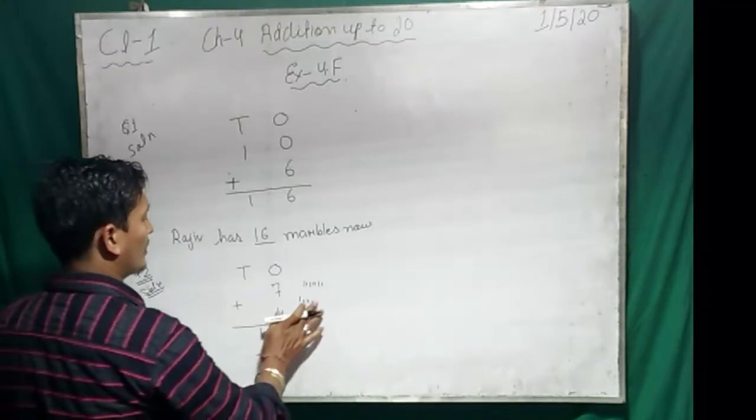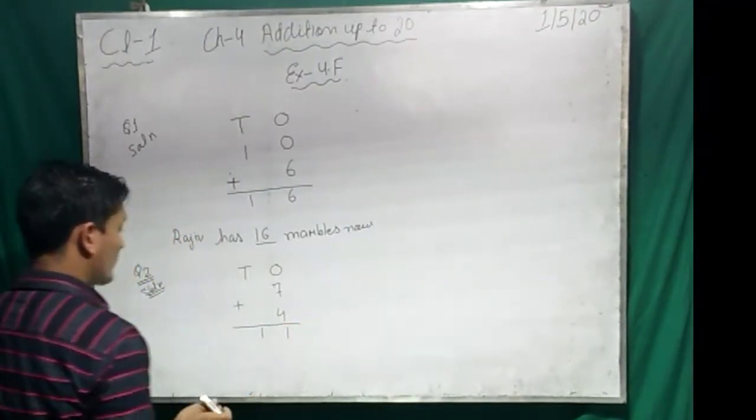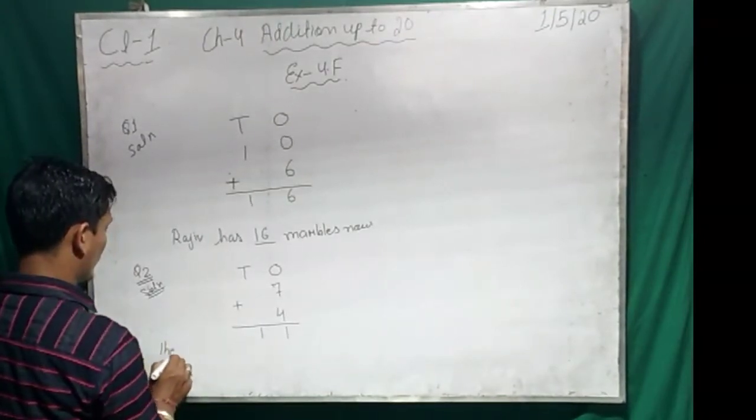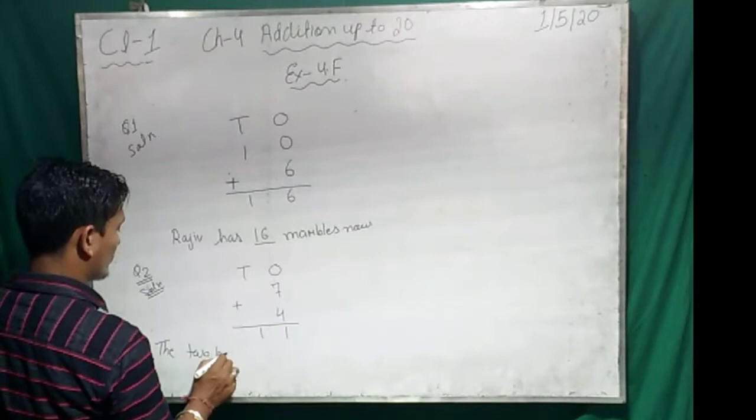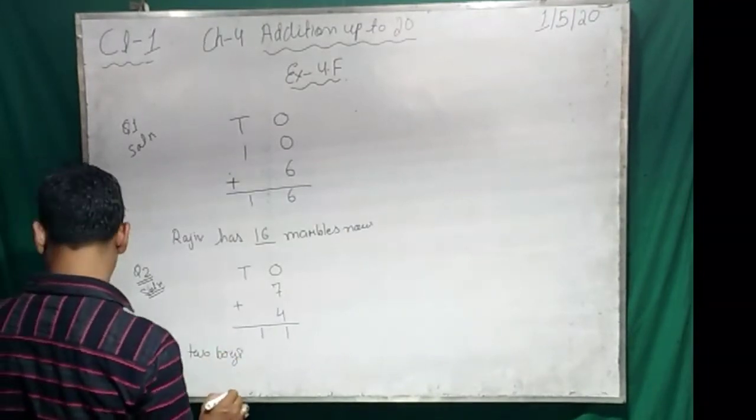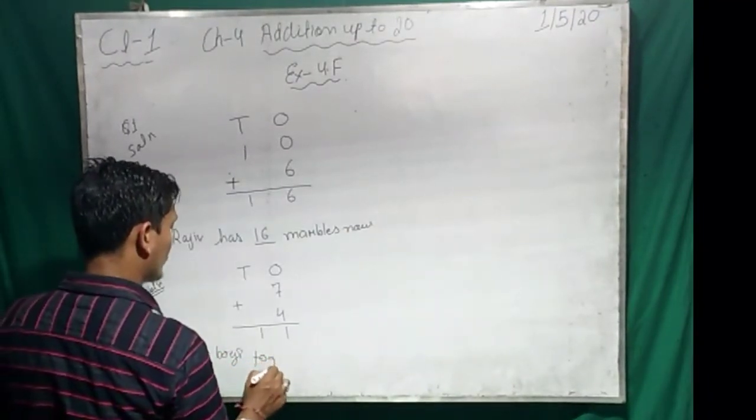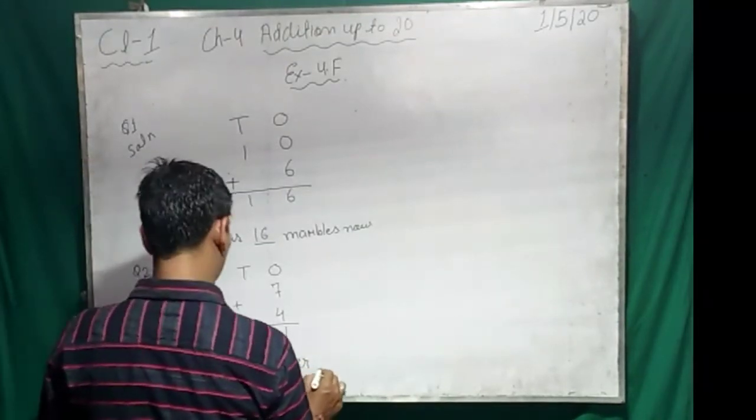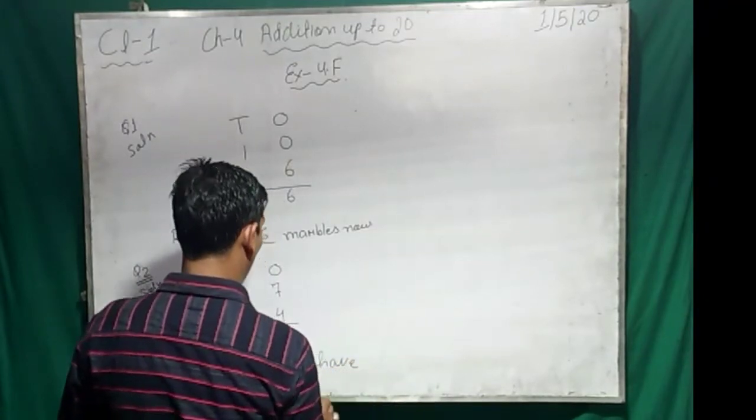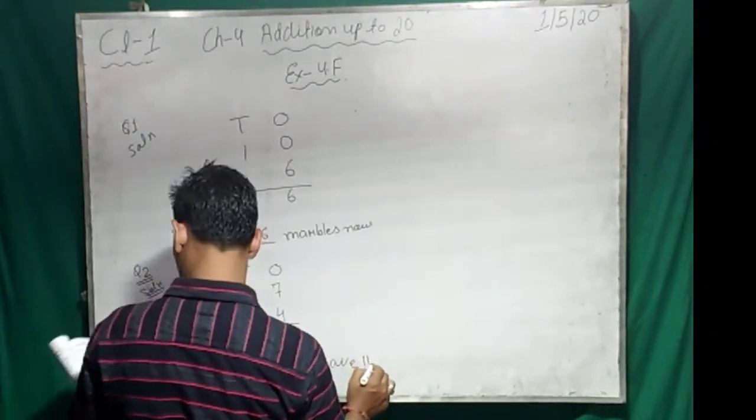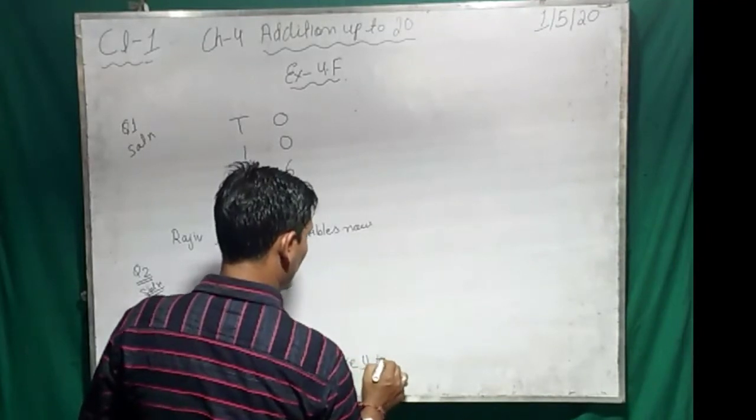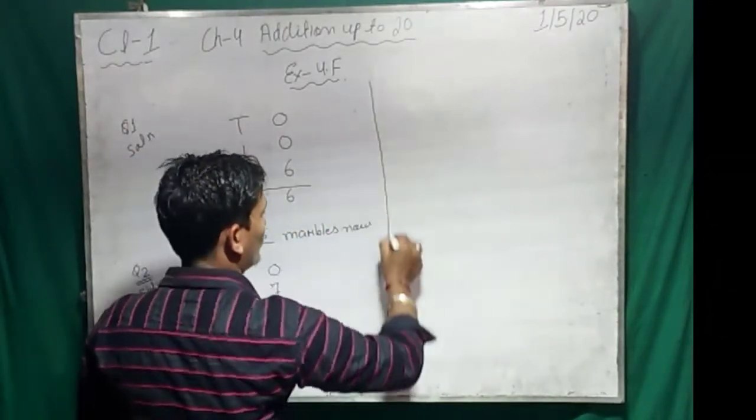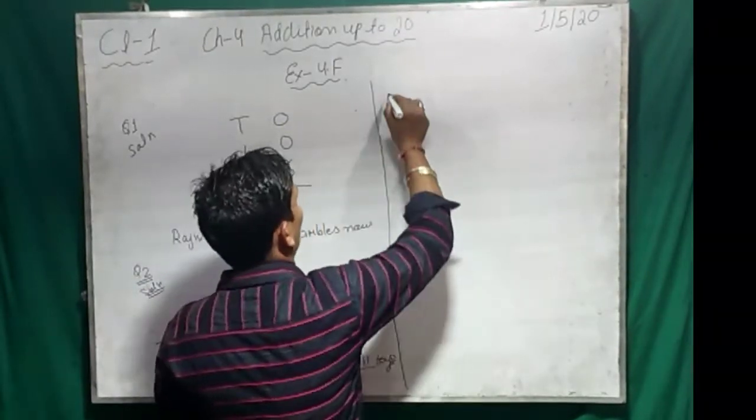Clear? Okay, so now write the last one. The two boys together have how many? Eleven toys. Done? Good.